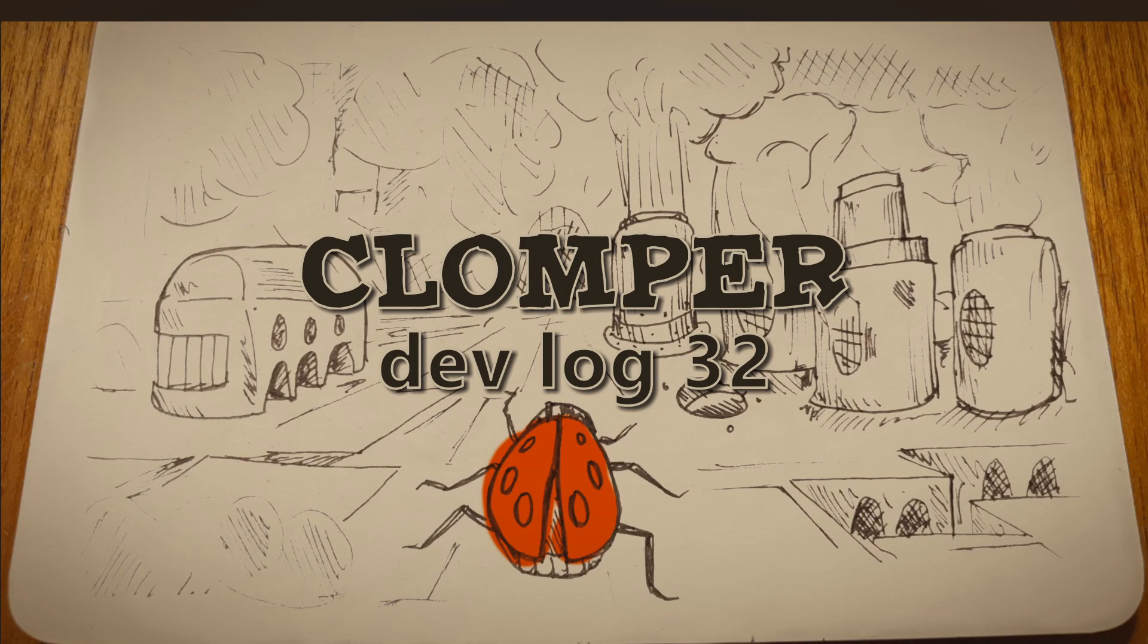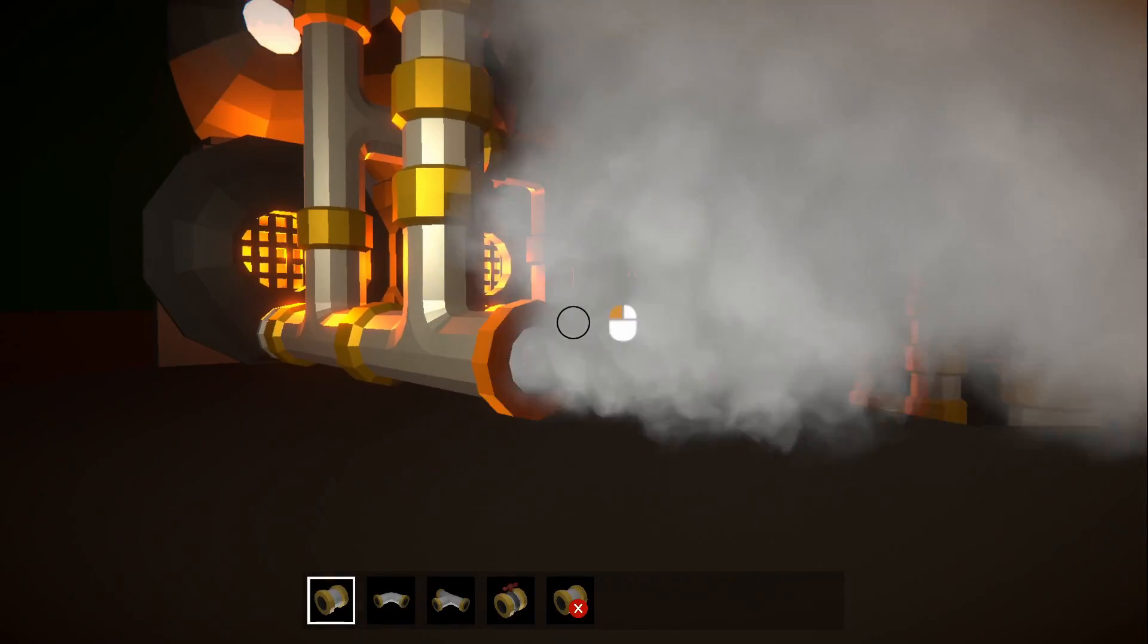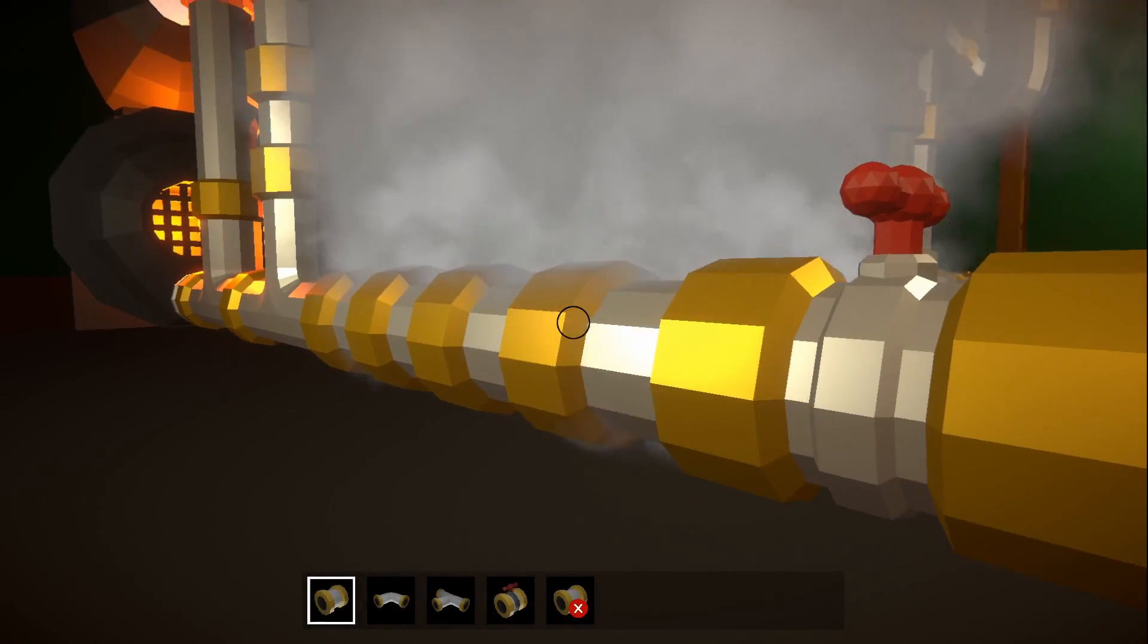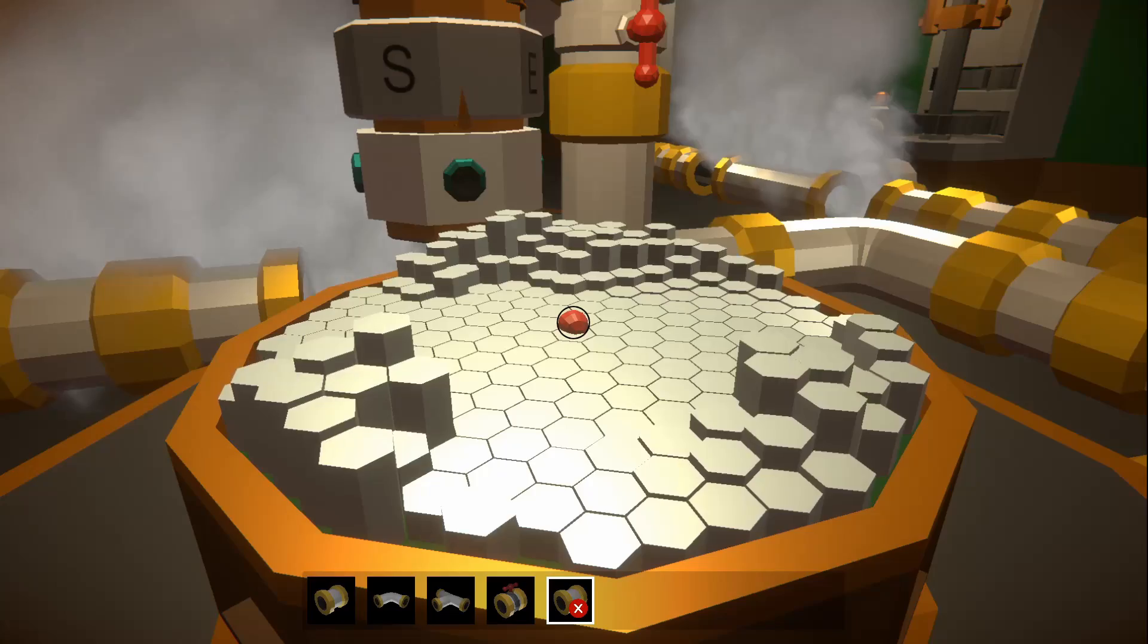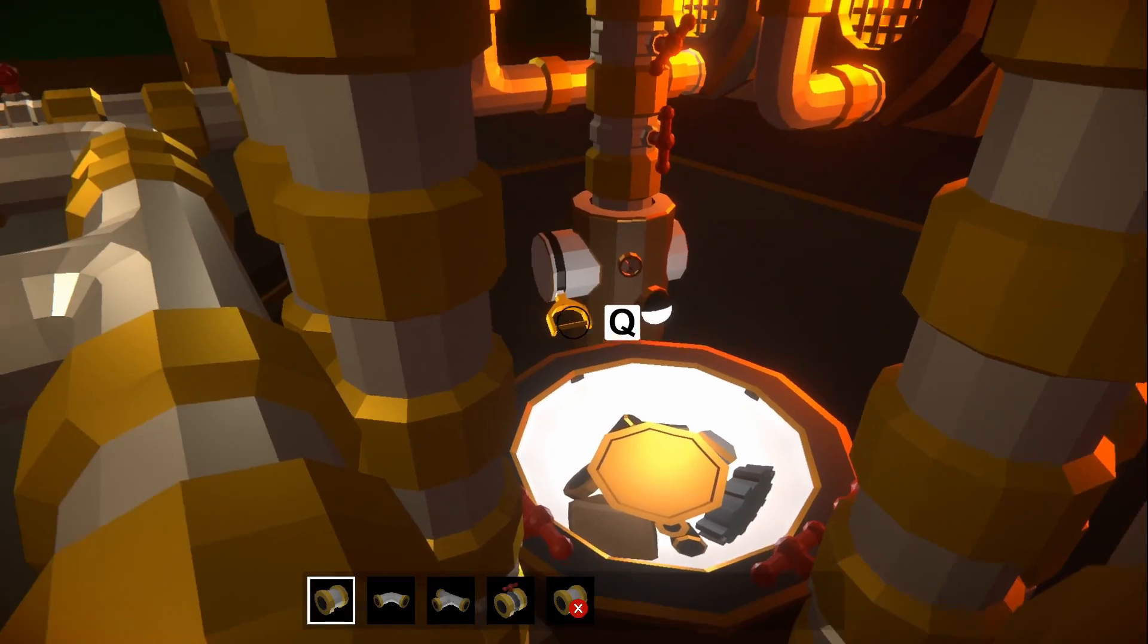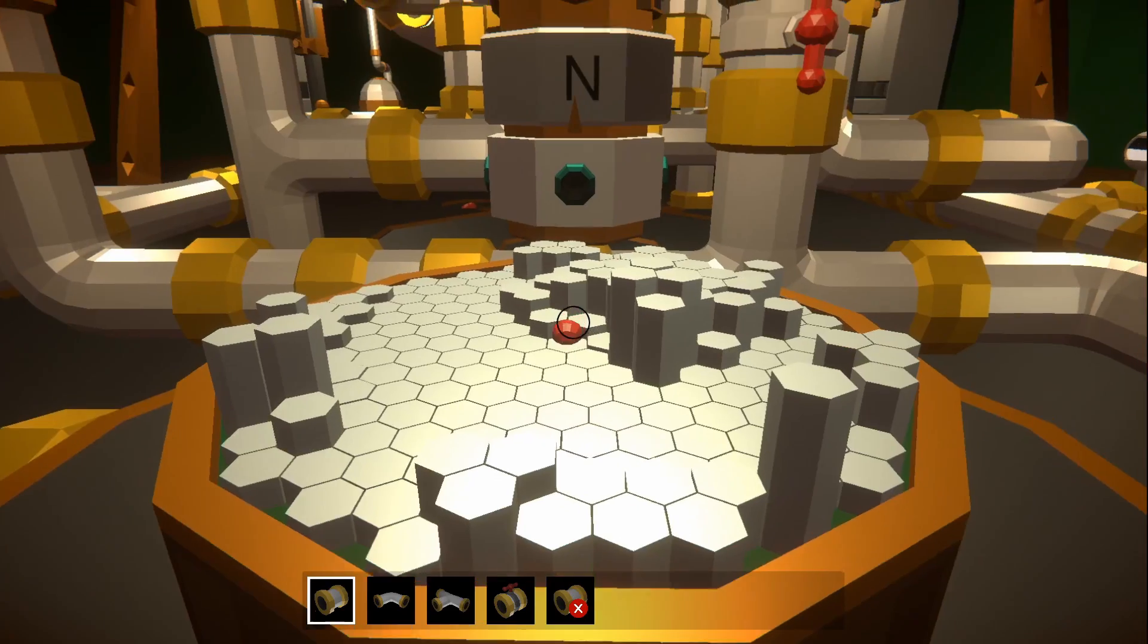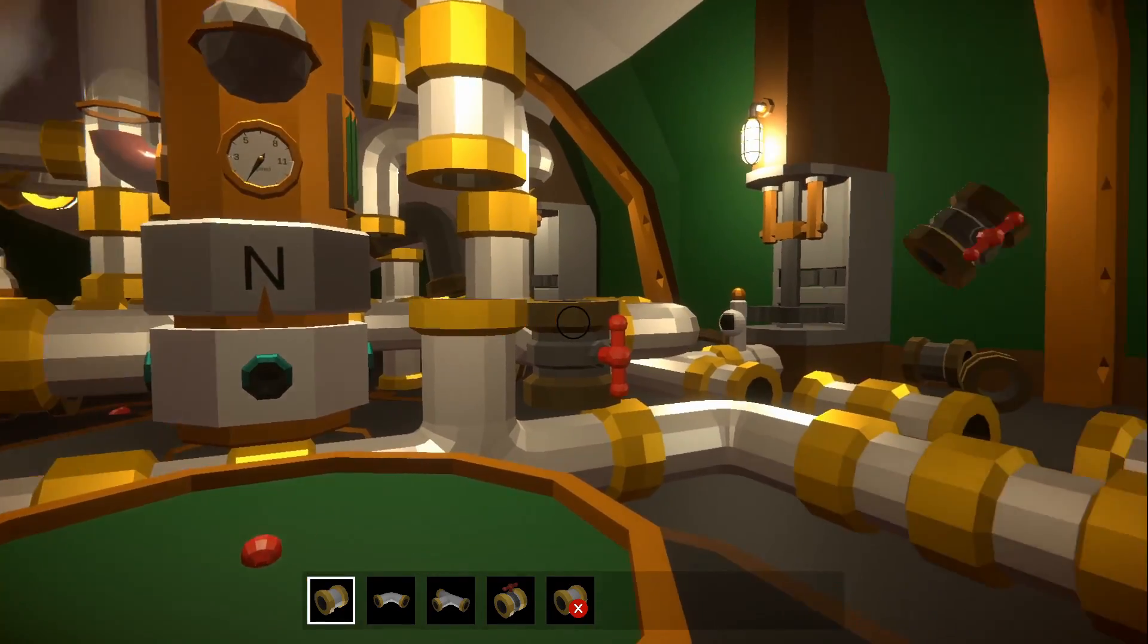Welcome back. I'm Rob Lang and this is my game Clomper. You live inside a mechanical ladybird called a clomper, which you can control by laying pipes to power machines with steam. The outside world is a hellscape that you explore from inside the clomper, picking up resources and completing quests. If that sounds like fun, like and subscribe for more.